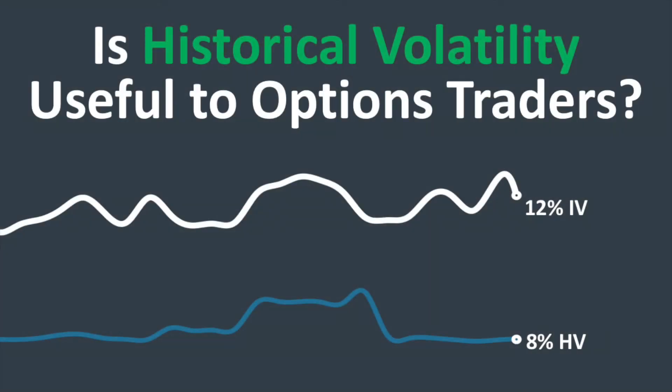Hey everybody, Chris here from Project Option. In this video we're going to talk about historical volatility and look at whether or not it is useful to options traders. We're going to do that by looking at a 10-year study, examining trade entries based on the relationship between implied volatility and historical volatility, and see if these different trade entries lead to more or less profitable trades.